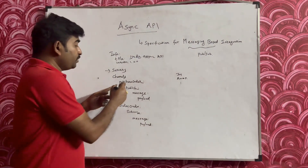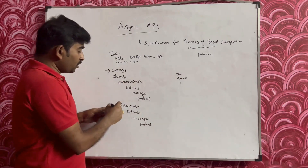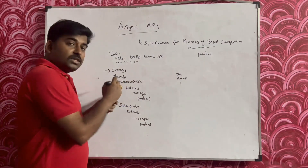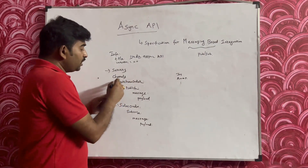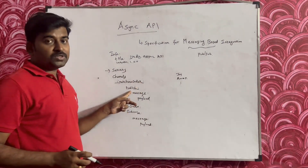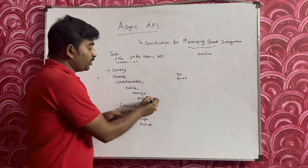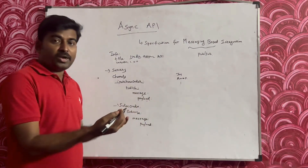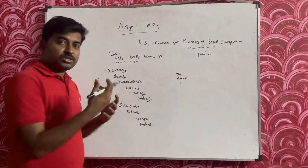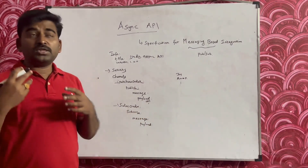Under the channel section, you need to mention the queue or topic name. For example, purchase order and sales order are both channel names or topic names. This documentation tells you that this purchase order topic has a publish option, so anybody can publish data to it. In the payload section, you can define how your payload should be — for example, as an object with a number of fields as key-value pairs.